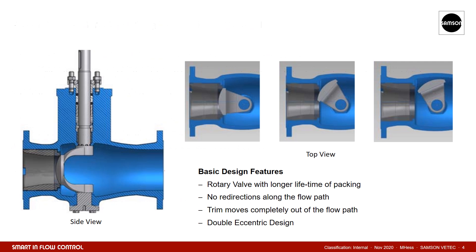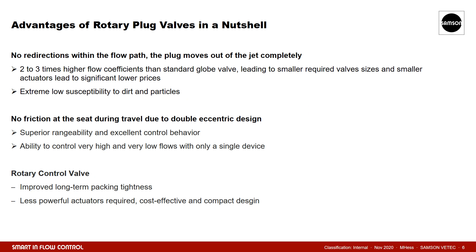There are three major advantages of rotary plug valves. The first is the free flow path without any redirections, combined with the fact that the plug moves out of the jet in the fully open position. Rotary plug valves have a two to three times higher flow coefficient compared to standard globe valves. Thus, smaller sizes and smaller actuators can be utilized for identical process conditions, leading to a significant price reduction. This physical background also leads to an extremely low susceptibility to dirt and particles. The second advantage is that due to the double eccentricity, there is no friction on the seat during the plug's travel. Rotary plug valves therefore have excellent control behavior and superior rangeability, making them a first choice when very high and very low flows need to be controlled with only one device.